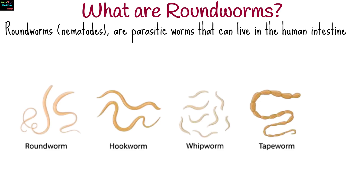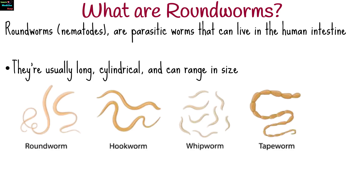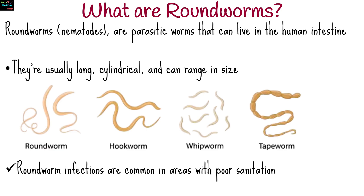Roundworms, also known as nematodes, are parasitic worms that can live in the human intestine or other parts of the body. They're usually long, cylindrical, and can range in size from tiny microscopic worms to several inches in length. Roundworm infections are especially common in areas with poor sanitation. Here are some common types of roundworms that affect humans.